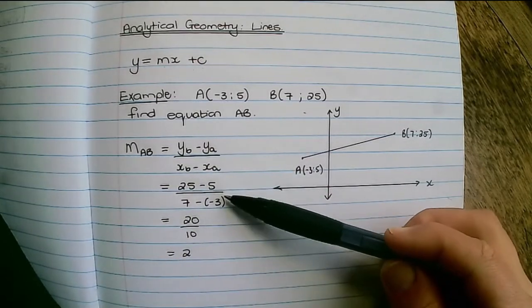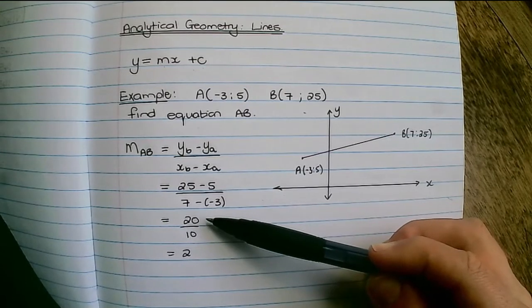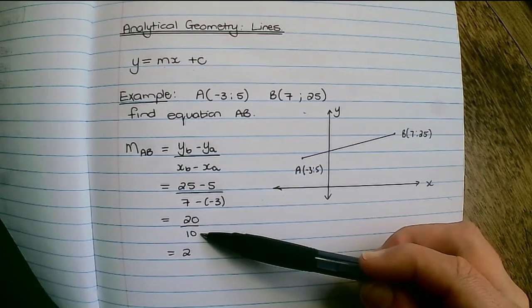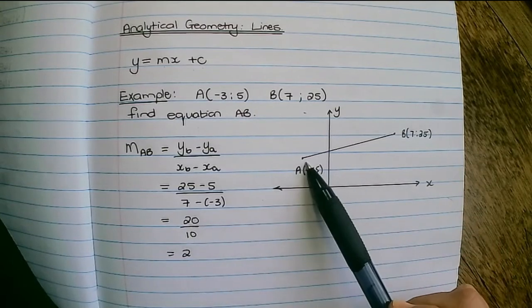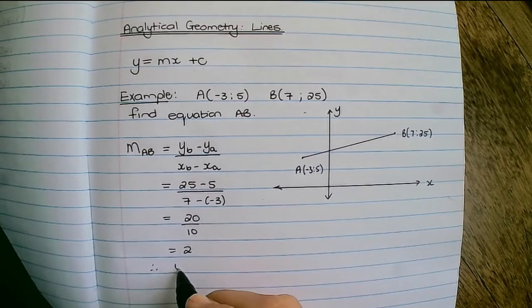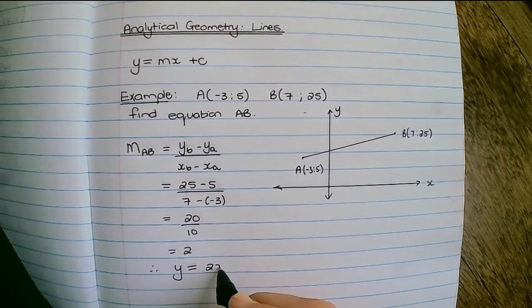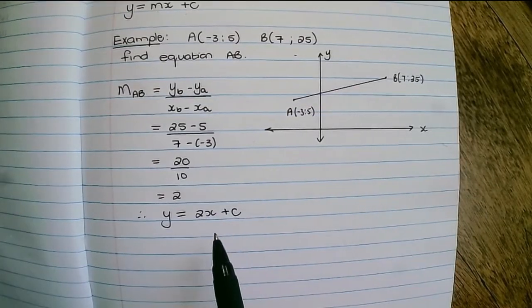I substitute each value then simplify the numerator and denominator and then simplify that fraction. So the gradient between line A and B is equal to 2. Therefore y equals 2x plus c.